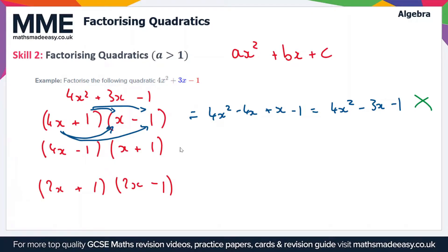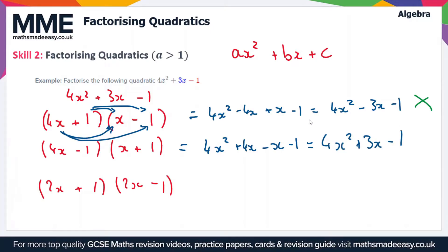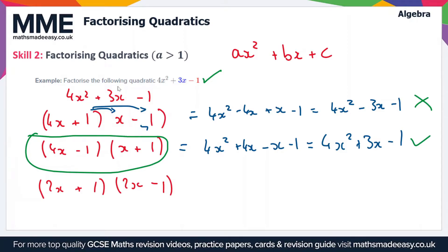Moving on to the second one: (4x - 1)(x + 1). We do 4x times x which gives us 4x squared, then 4x times plus 1 gives us plus 4x, then minus 1 times x gives us minus x, and minus 1 times plus 1 gives us minus 1. Collecting like terms gives us 4x squared plus 3x minus 1, which is the same as our original quadratic. So the factorised form is (4x - 1)(x + 1) — that's our correct answer.